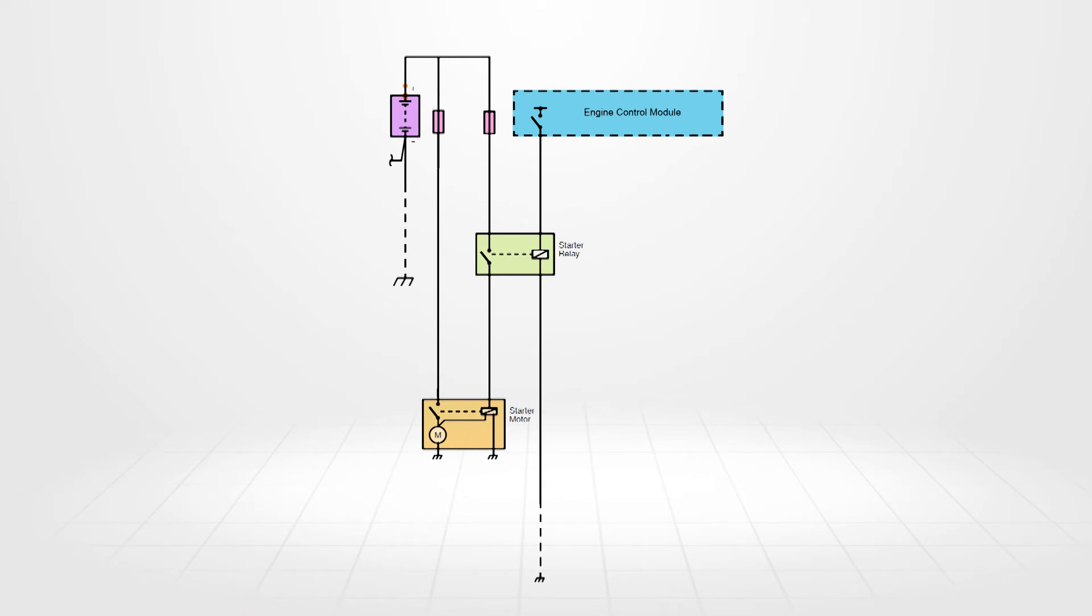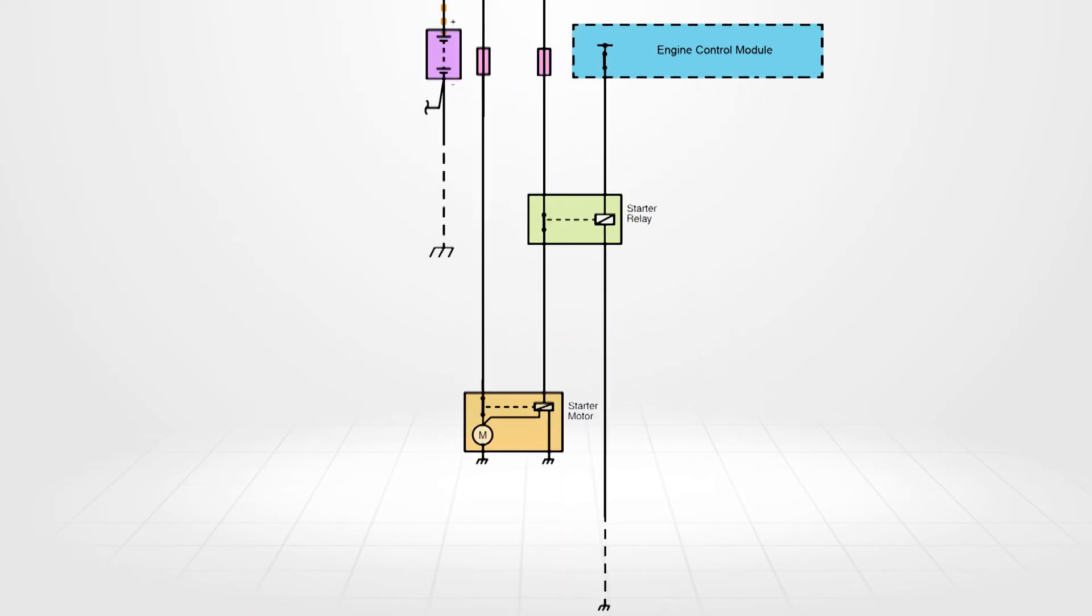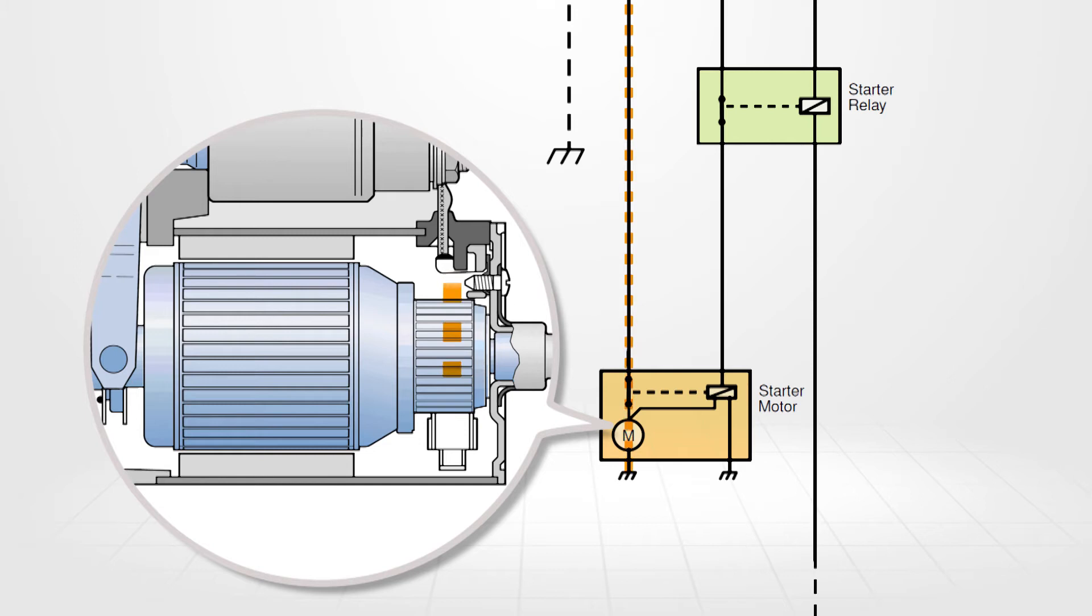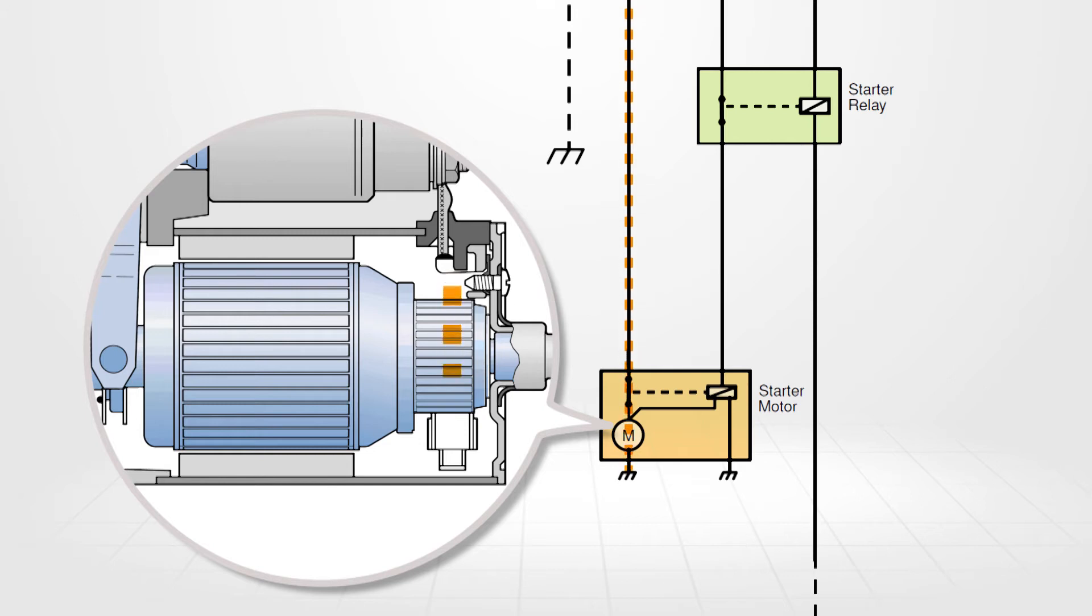When the starter is operated current from the battery flows to a solenoid where it crosses a set of contacts then enters the electric motor's brush set.